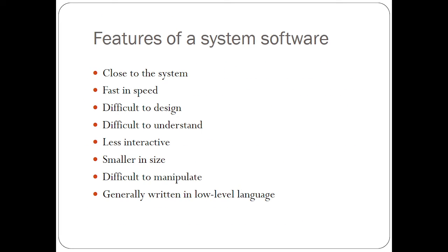Let's look at the features of system software. As you can recall from the diagram, it is close to the system or the hardware. It is fast in speed — when a system software initializes, it initializes very, very fast. They are very difficult to design, looking at the nature of how we need to program and develop them. They are also difficult to understand because of the languages being used and the steep learning curve required. They are less interactive compared to application software — system softwares don't have a very interactive graphical user interface. They are always often smaller in size.